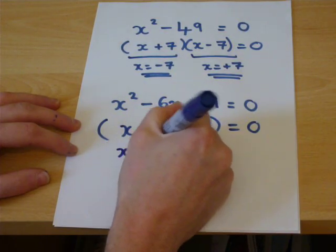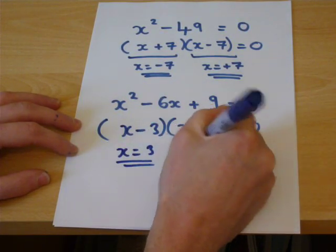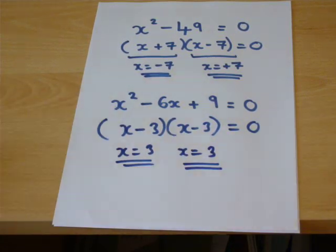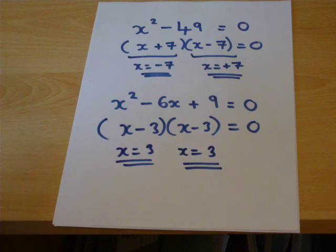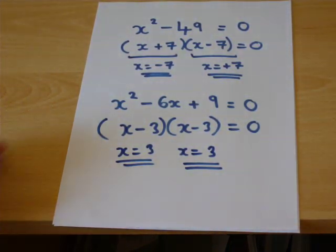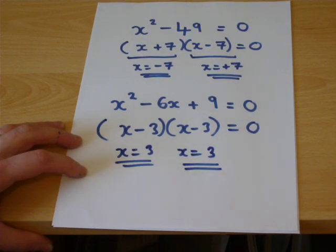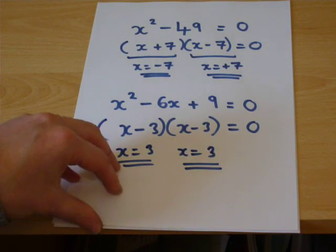And in this case, the two solutions are plus 3 or plus 3. They can be called repeated roots, where we have the same solution occurring twice. So in fact, there's only one solution to that equation, x equals plus 3.